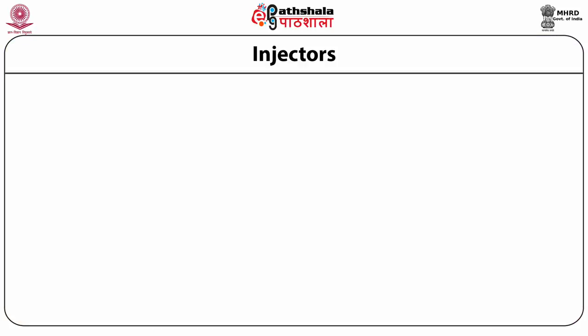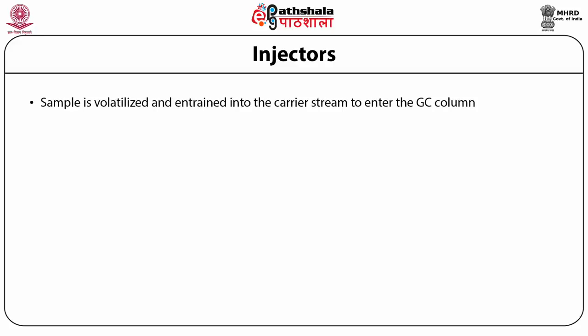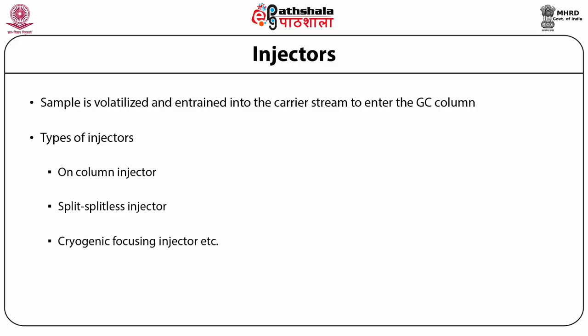The next component is the injectors. After passing through the resin trap, purified helium enters the injector where it acts as the mobile phase by pushing analytes through the separation column. The chromatographic process begins when the sample is introduced into the column without disrupting the flow. The sample is volatilized and the resulting gas is entrained into the carrier stream entering the gas chromatograph column. Numerous types of injectors are available, like on-column injector, split-splitless injector, and cryogenic focusing injector.